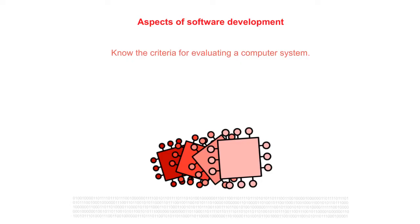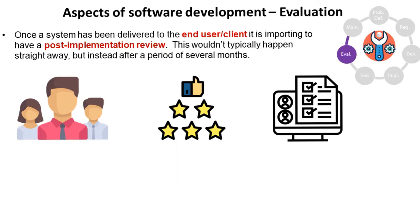In this video, we take a look at the evaluation phase of the software development lifecycle. Once a system has been delivered to the end user or client, it's important to have a post-implementation review. This wouldn't typically happen straight away, but instead after a period of several months. This period allows the user to get used to the system — they'll have a chance to use it in a live situation and discover any issues, shortcomings, or bugs which didn't get caught during testing.